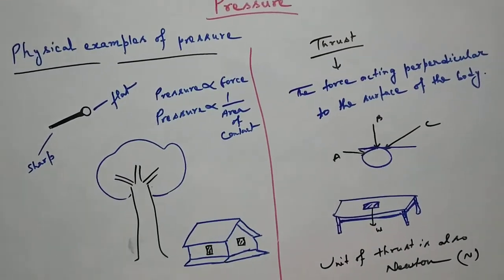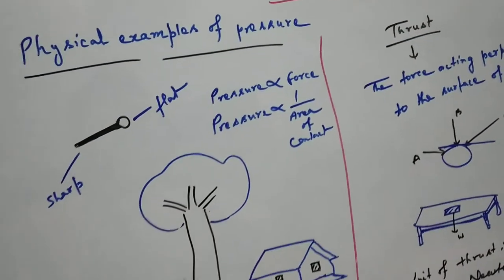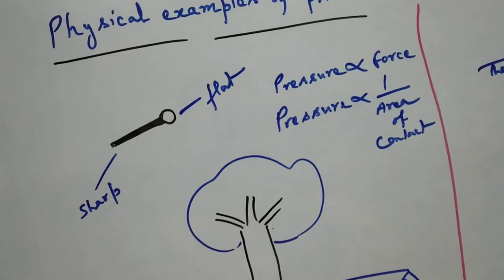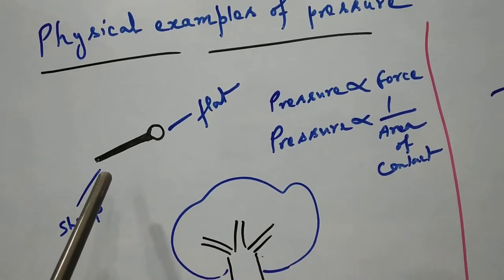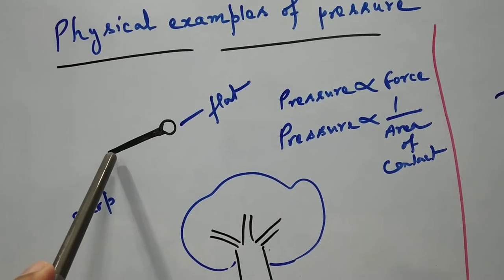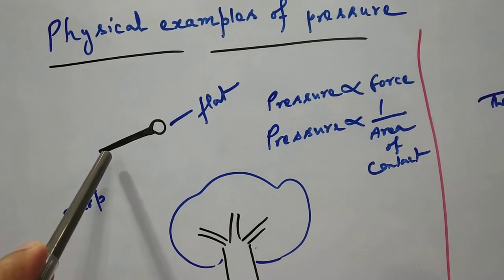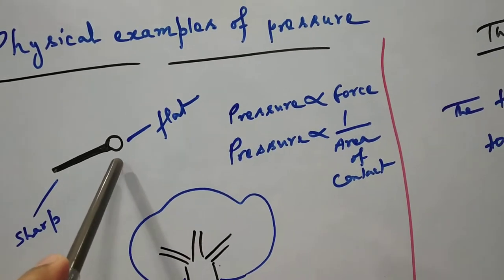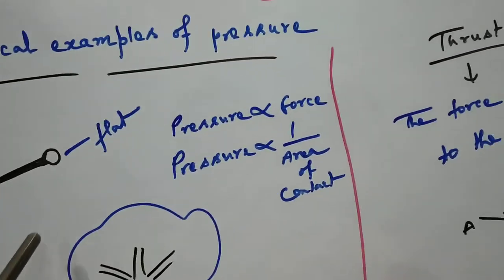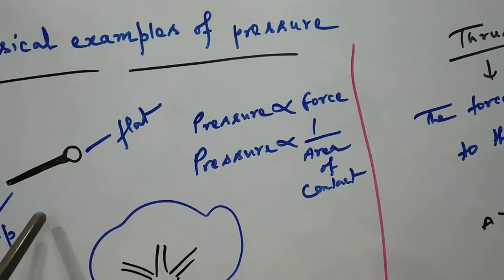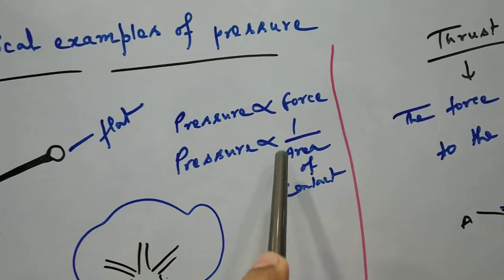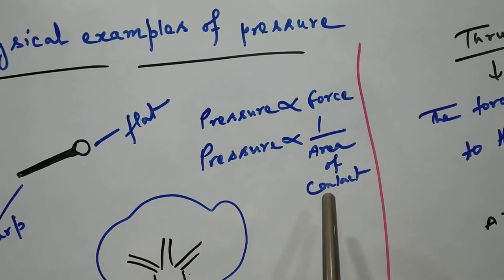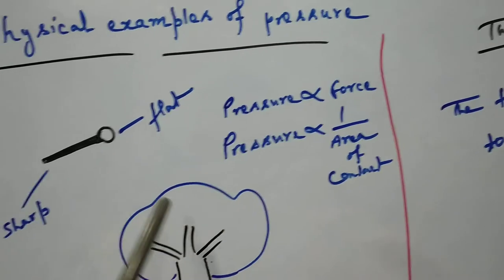In this video we will see physical examples of pressure. In the case of an iron nail, when we try to pierce it into a wall or any object, we use the sharp side. Why do we use the sharp side instead of the flat or blunt side? Because pressure is proportional to force and pressure is inversely proportional to the area of contact.